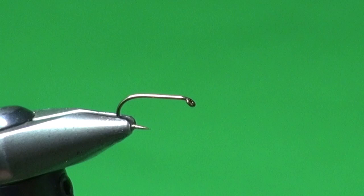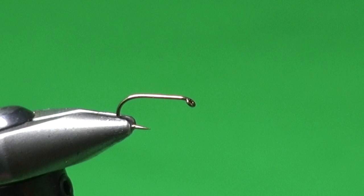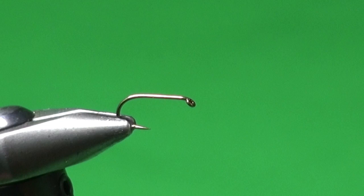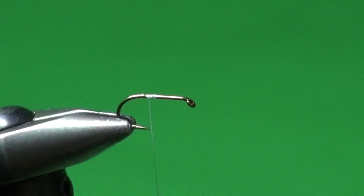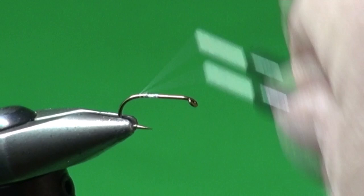So let's tie Alfred's Boatman. Into the jaws of my vise, I've put a Daiichi 1530 number 10. You tie these in number 10s, number 12s to imitate Boatman. I'm going to start my tying thread about the midpoint. I'm just back of the midpoint. It's going to be white tying thread, this is 6-aught MFC. Right back to the base.